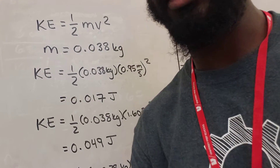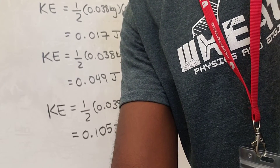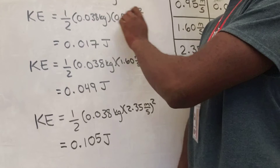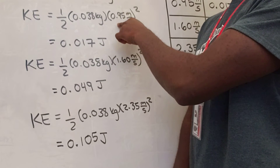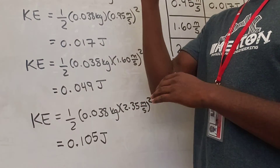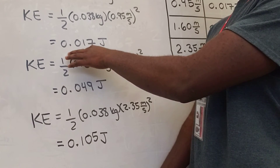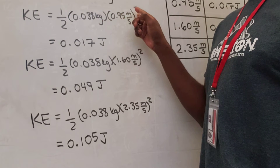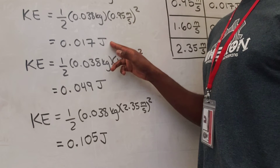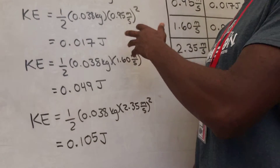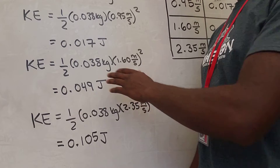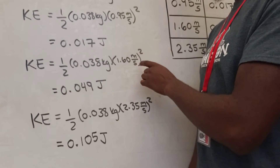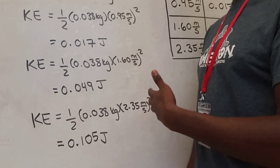Now we're going to go ahead into our calculations. KE equals one-half the mass of our car times the velocity when the car ramp was the height of one book, squared. That gives us a total of 0.017 joules. Remember, even though our units come out as kilograms times meters squared per second squared, that is equal to a joule. So 0.017 joules is our energy for one book high. For two books high, we plug in the velocity of 1.60 meters per second, and that gives us an energy of 0.049 joules.